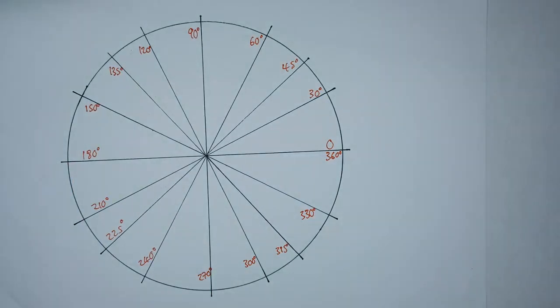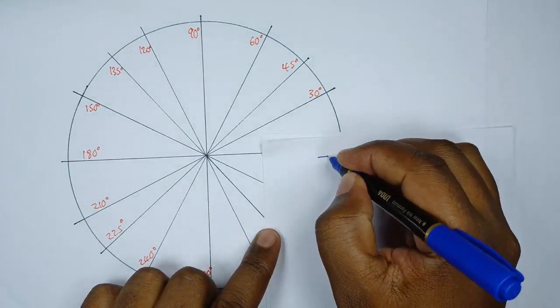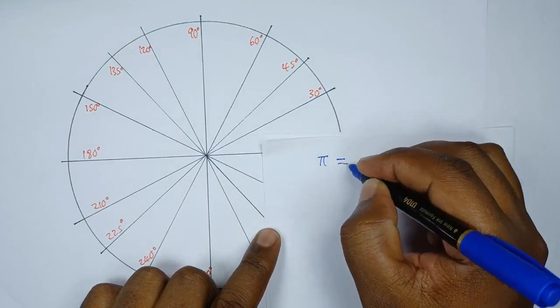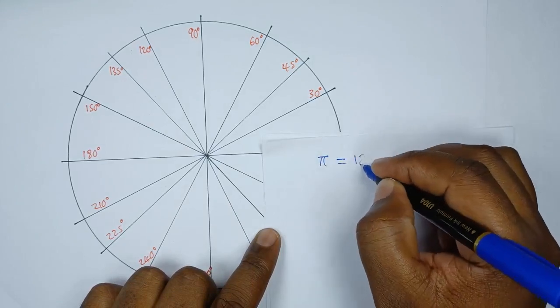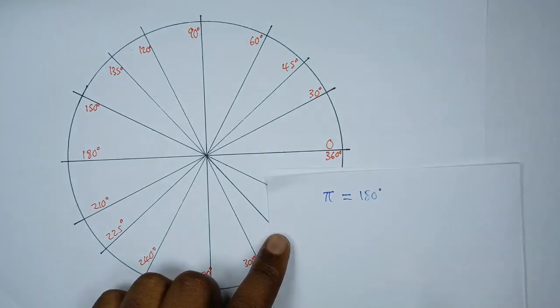So the next thing we're going to do is bring in the measure of angles in radians. It's important to know the conversion factor: pi radians is equivalent to 180 degrees.